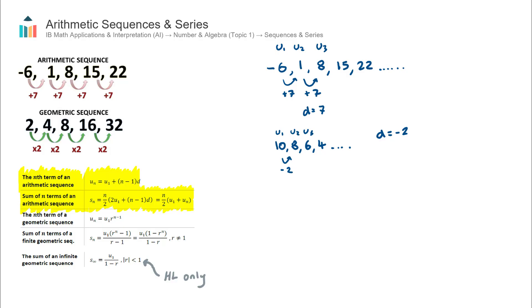Now in your formula booklet, you are given a number of formulas related to sequence and series. You can see there are five here. The top two are related to arithmetic sequences. So we're going to talk about these two in this video.